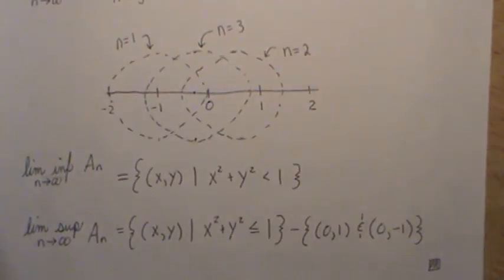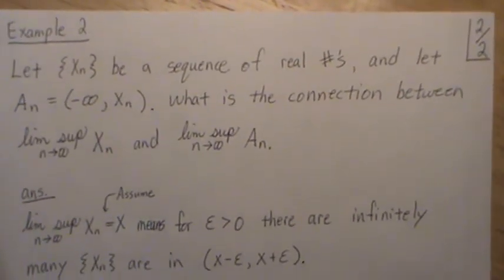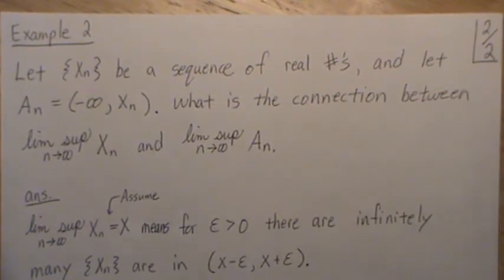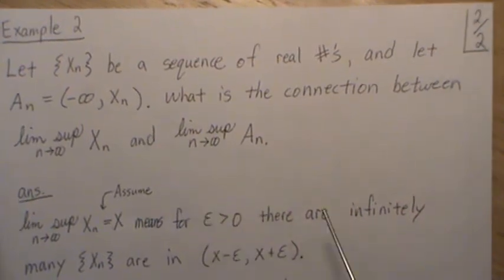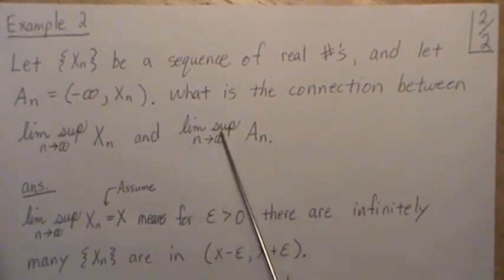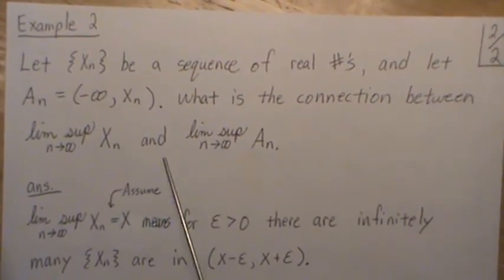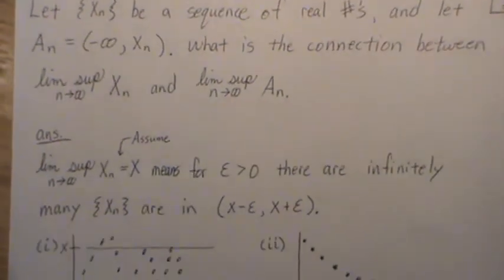For Example 2, we let xₙ be a sequence of real numbers and let Aₙ be the interval (-∞, xₙ), which is open — not including the endpoint xₙ. The question is: what is the connection between the limit supremum of the sequence xₙ and the limit supremum of the sequence of sets Aₙ?